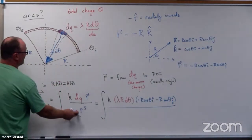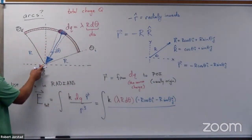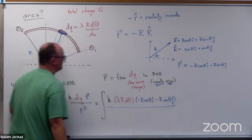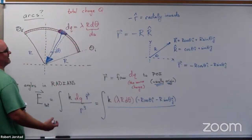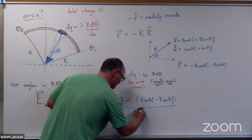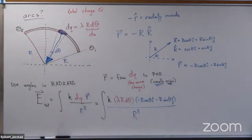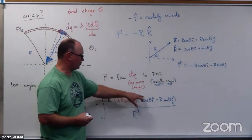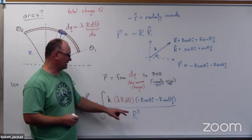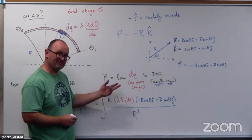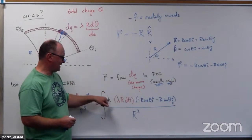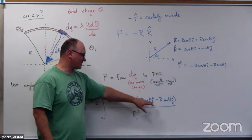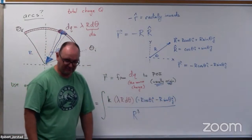Fortunately, the distance from every single point to the origin is capital R, so the magnitude is R and we cube that. When we plug this in, we see r² on top and r³ on bottom — canceling to give k·lambda/R · (cosθ·î + sinθ·ĵ) · dθ. Notice the unit vector actually matters in the integration since it depends on θ.